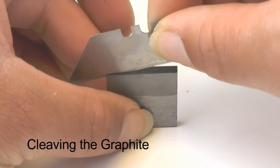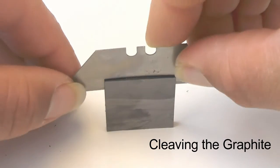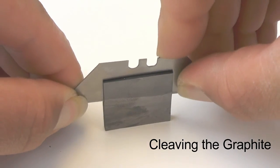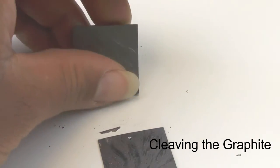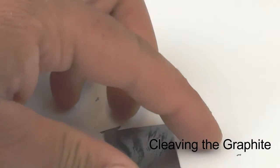We then prepare a small, thin piece of pyrolytic graphite. Pyrolytic graphite can be cleaved into very thin pieces using a sharp razor blade. This is the most difficult part, and of course, be very careful when cutting.